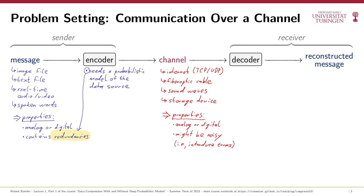We change the encoder so that it adds some redundancies to the message. The decoder can then use these redundancies to detect and correct any errors that might have occurred due to channel noise. Error correction is in some sense orthogonal to data compression, so we'll touch on it only very briefly. You'll mainly learn two things: first, we'll prove that one can design an error correction scheme that makes it astronomically unlikely for channel noise to affect the reconstructed message. Second, in order to design such an error correction code, one needs to know which kinds of noise the channel can introduce and with which probabilities — in other words, the encoder needs a probabilistic model of the communication channel.